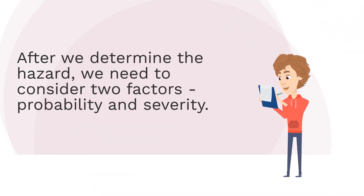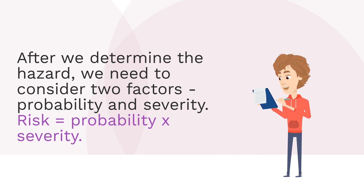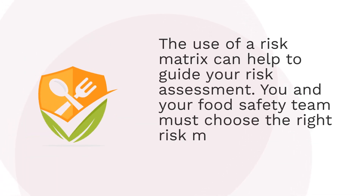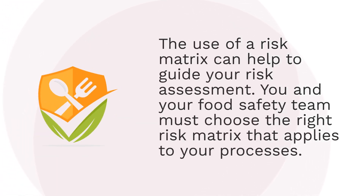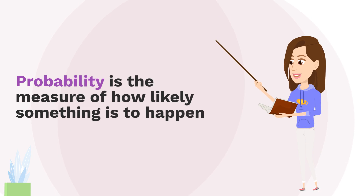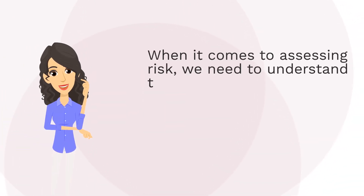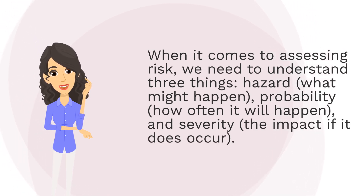After we determine the hazard, we need to consider two factors: probability and severity. Risk equals probability × severity. The use of a risk matrix can help to guide your risk assessment. You and your food safety team must choose the right risk matrix that applies to your processes. Probability is the measure of how likely something is to happen. When it comes to assessing risk, we need to understand three things.